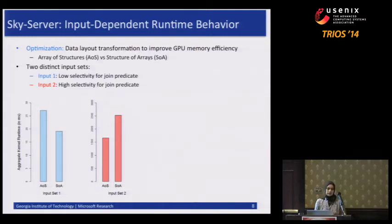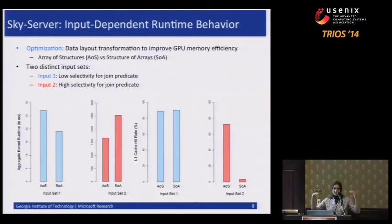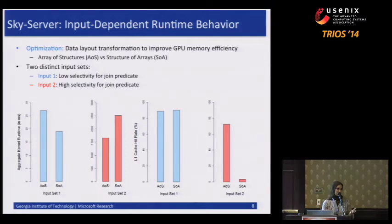This was unexpected because clearly the transformation improved the number of transactions required to access that data. Digging deeper, we found that although we improved global memory efficiency, we ended up degrading the cache. For high-selectivity inputs with large data structures, when threads access first members you reduce the number of transactions — but for the next members they may not be in cache. In the low-selectivity case, members were located close by to each other and actually ended up fitting in the cache, so you didn't have to worry about memory transactions.